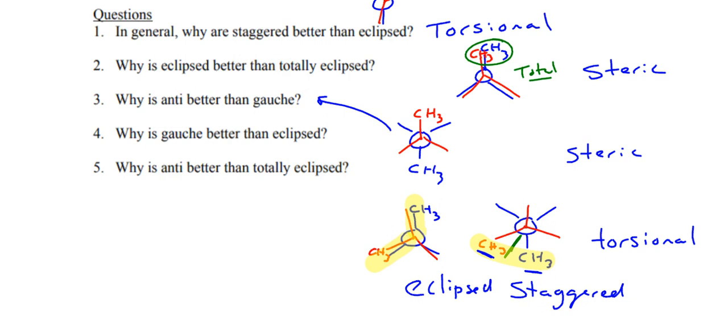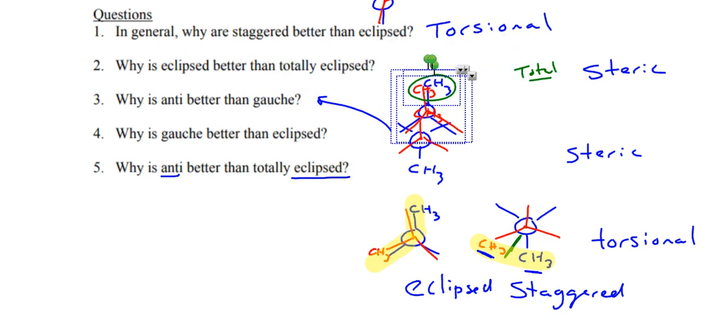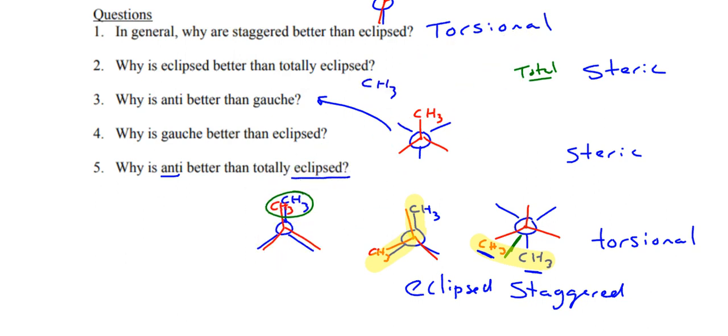When you compare an eclipse to eclipse or a staggered to a staggered, then a lot of times you're talking about steric. And then finally, why is an anti better than a total eclipse? Let's take a total eclipse. Here's my total eclipse, and here's my anti, because it's completely apart from each other. So why is that better? Well, when you go in between the two, first off you're going to have torsional. But you also have atoms too close together that are something other than an H. So you also have steric. So that is both.